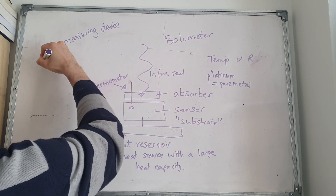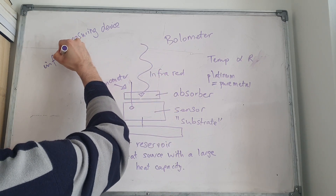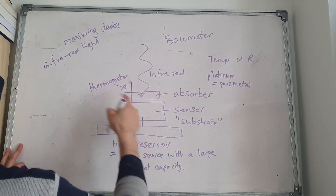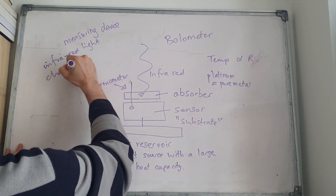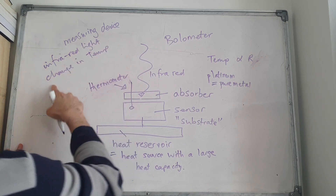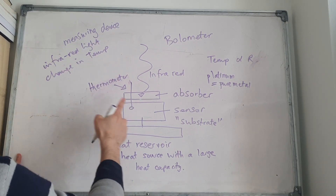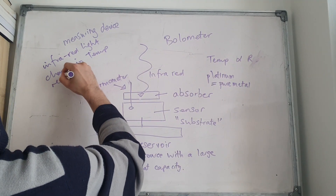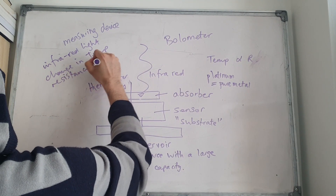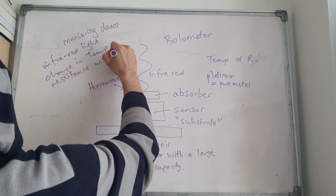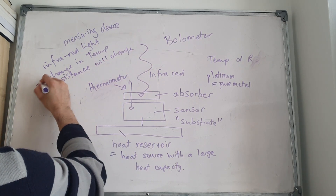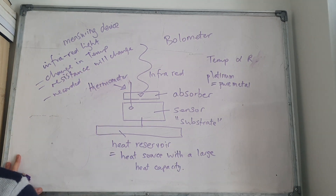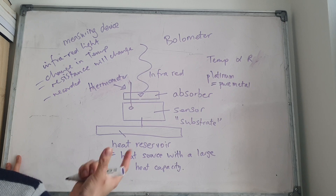When the infrared light hits the absorber, there is a change in temperature. Because the resistance changes, this will be recorded as a voltage difference — a potential difference.